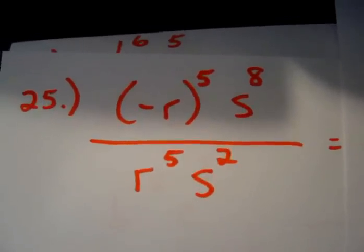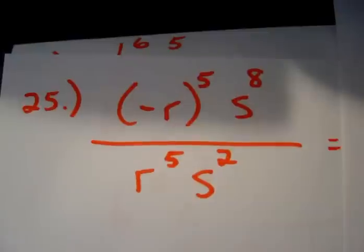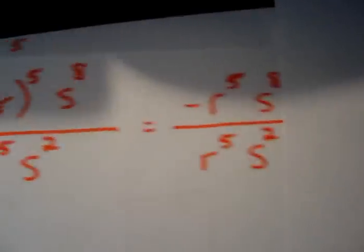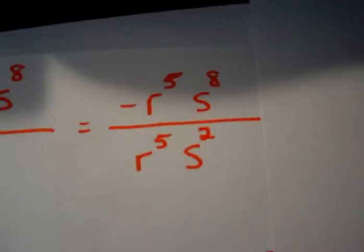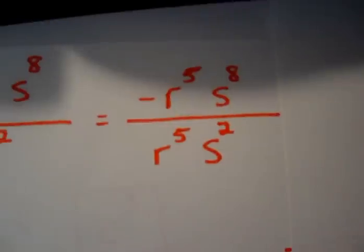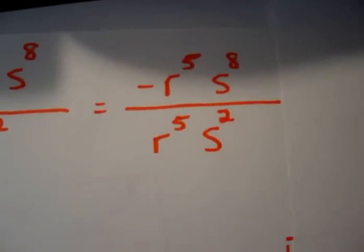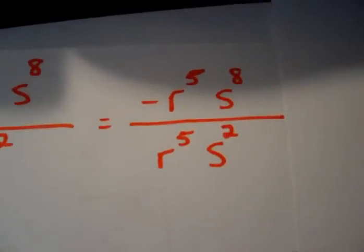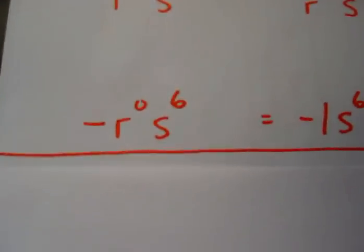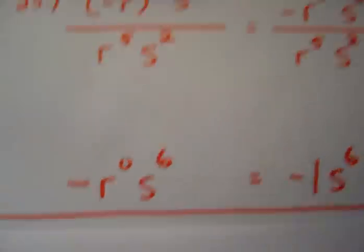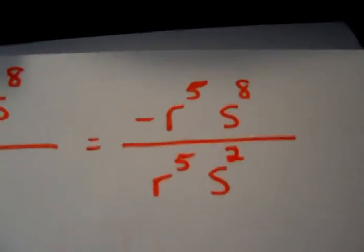That is like 5 multiplications of negative r. Anytime you multiply a negative sign an odd number of times, it's still negative. So here we have negative r to the 5th s to the 8th divided by r to the 5th s to the 2nd. Now, here's the stage where we have to subtract our exponents because we have consistent variables of r and s in the numerator and the denominator. As we move along, you can see that we have the following.